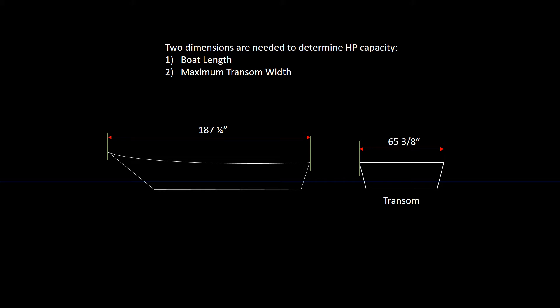There are two dimensions you need to determine the horsepower capacity, or the max horsepower outboard you can install on the boat. The first dimension is the boat length, and the second dimension is the maximum transom width. Our boat length is 187 and a quarter, and our max transom width turned out to be 65 and 3 eighths of an inch. Let me show you how I got those.